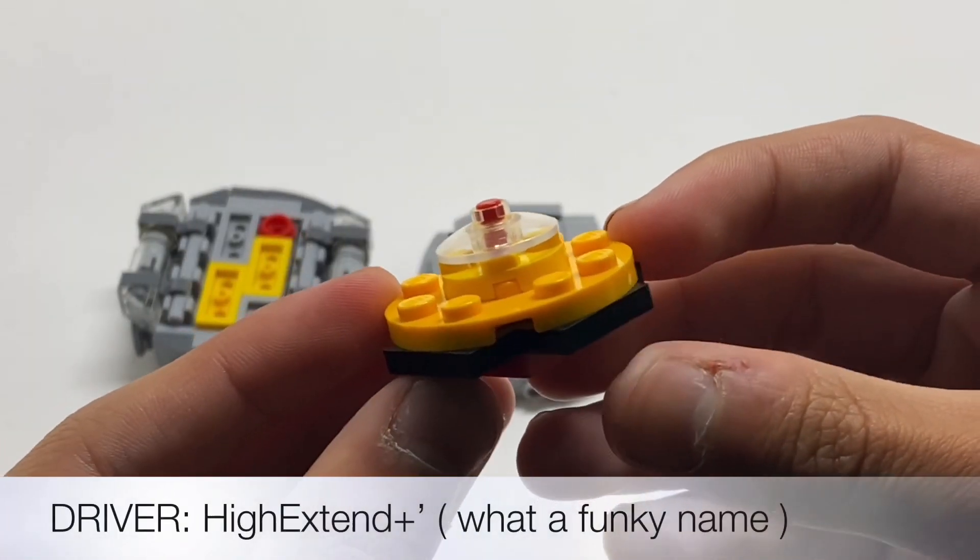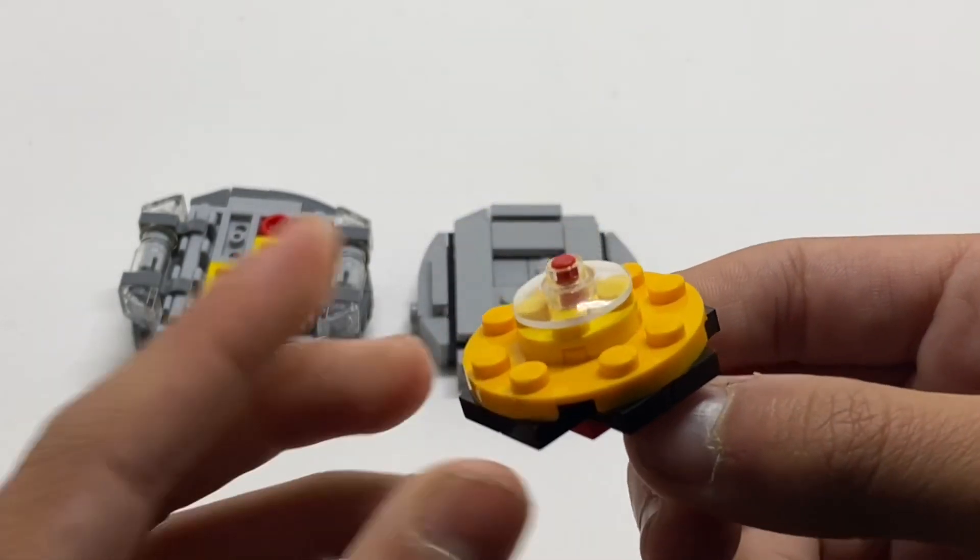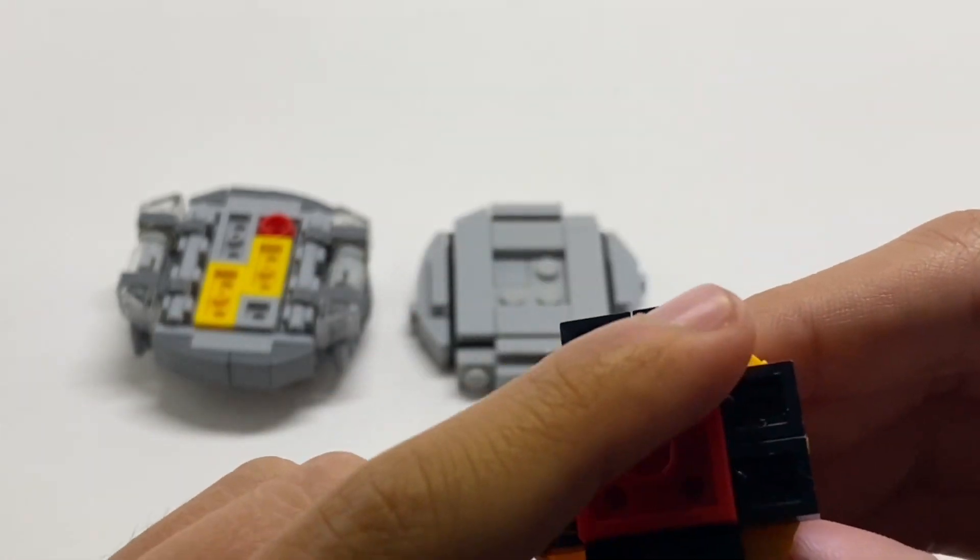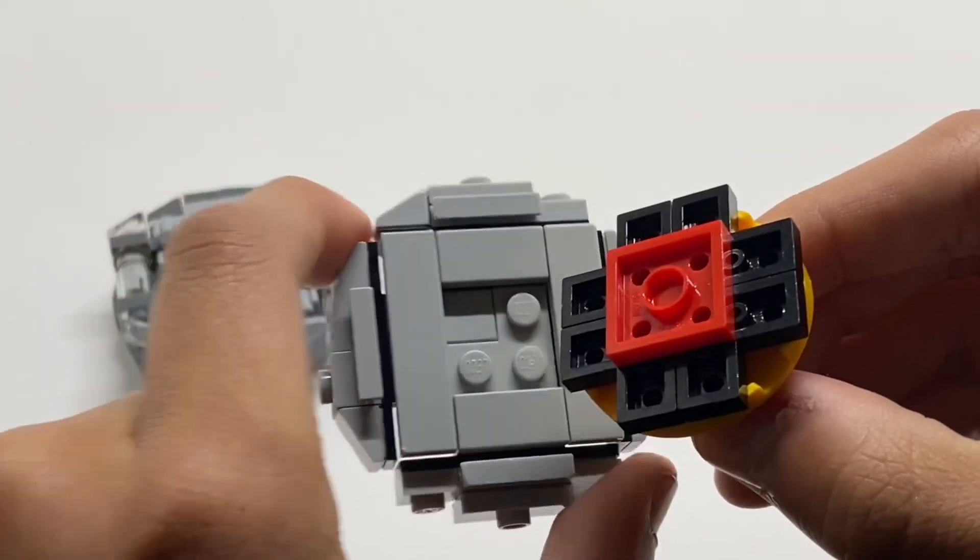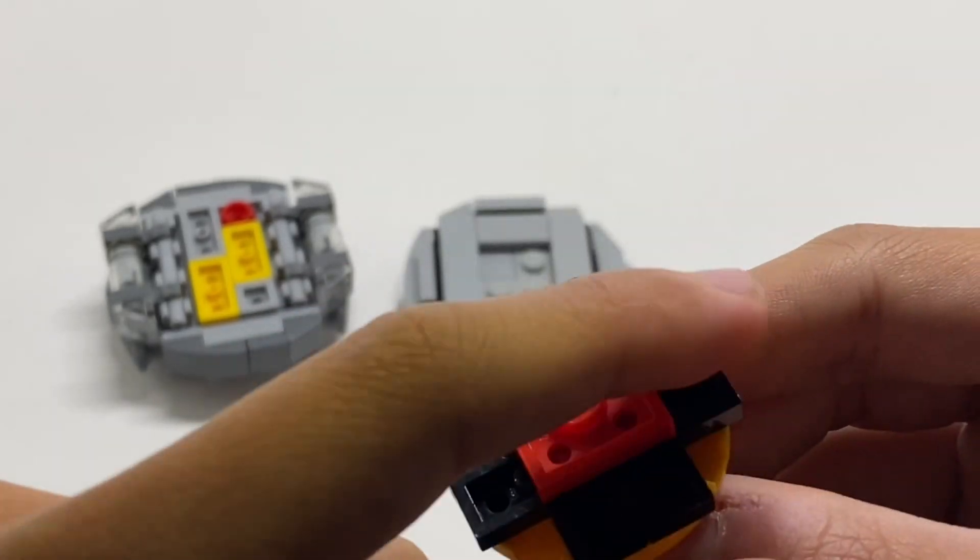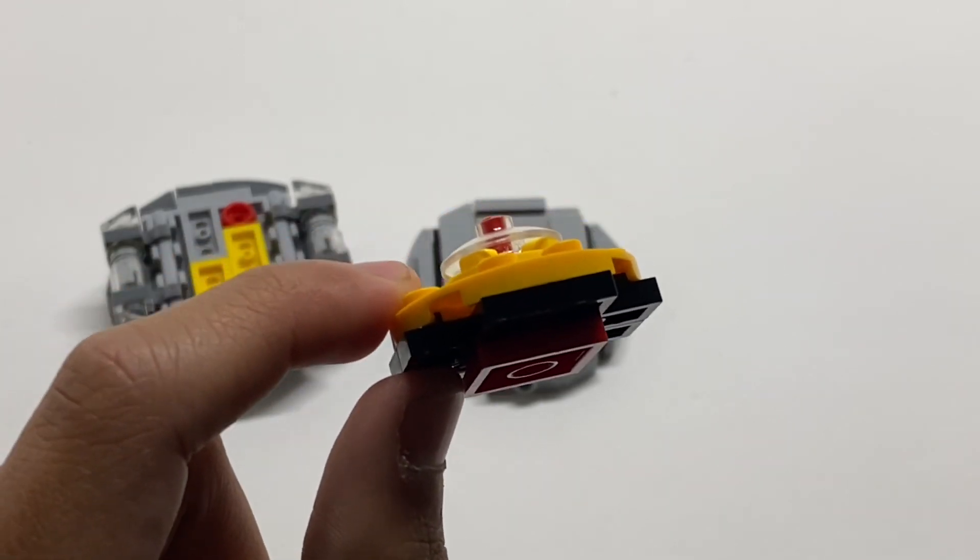Next, we have the driver, which is Extend Plus High Dash. This driver is quite special, since it does have a square connection to the disc right here, which makes it a lot stronger, as well as these extra black parts here, making the driver taller than most of my DB drivers.